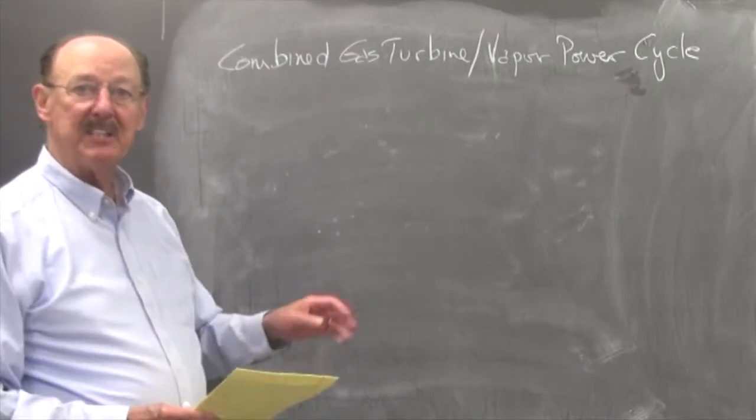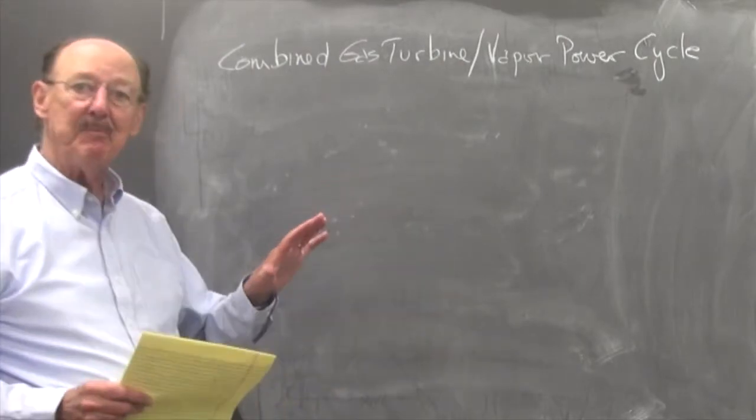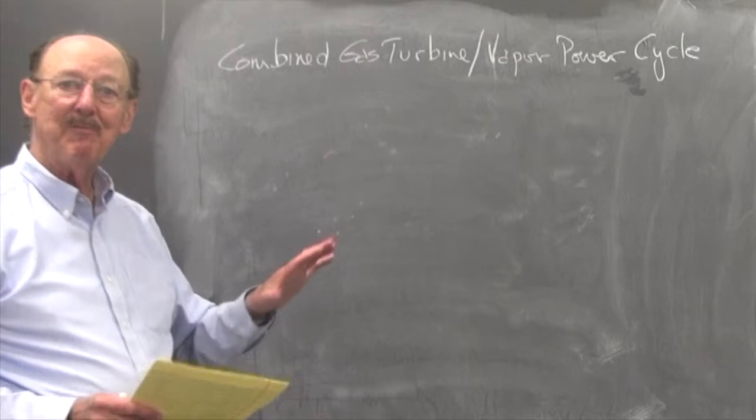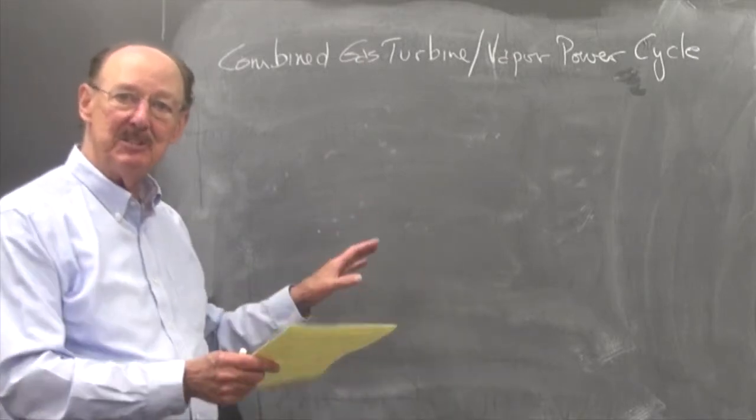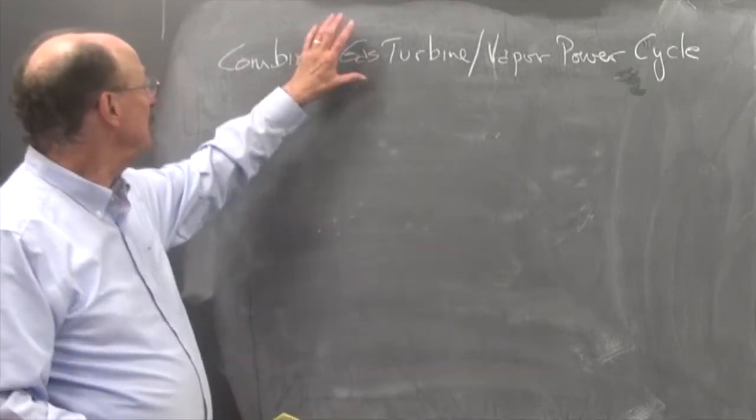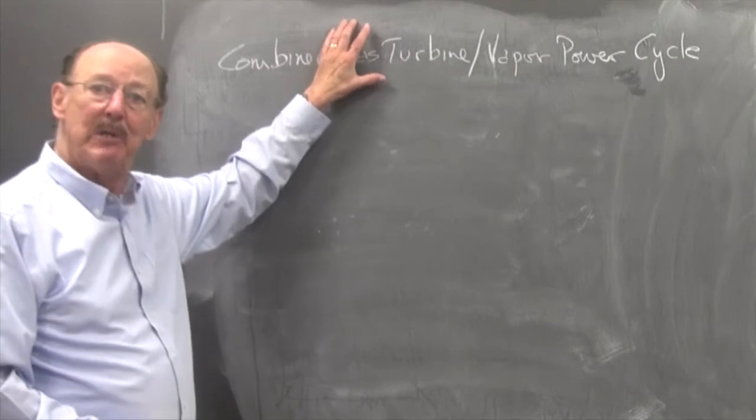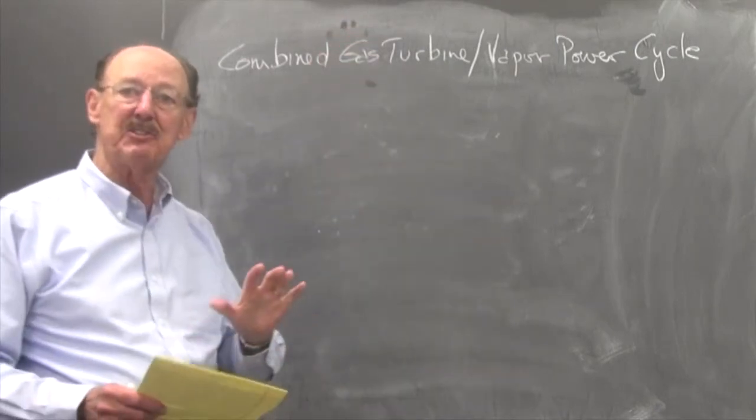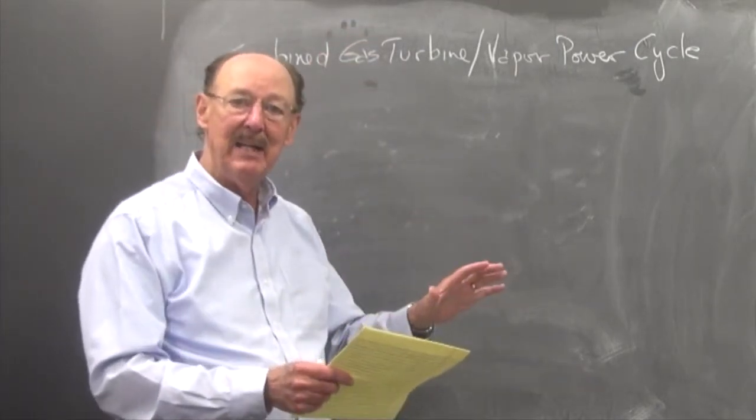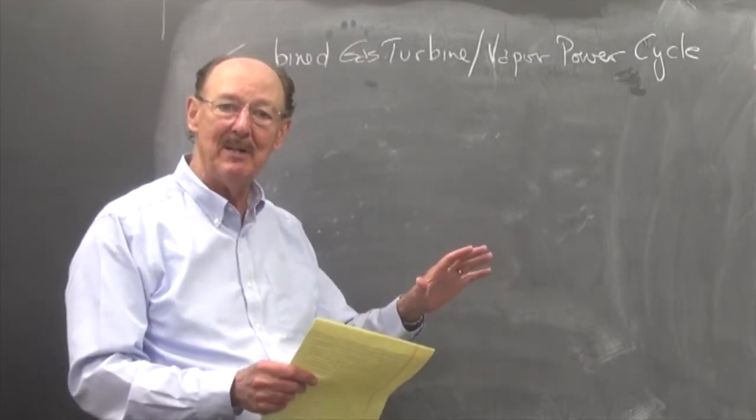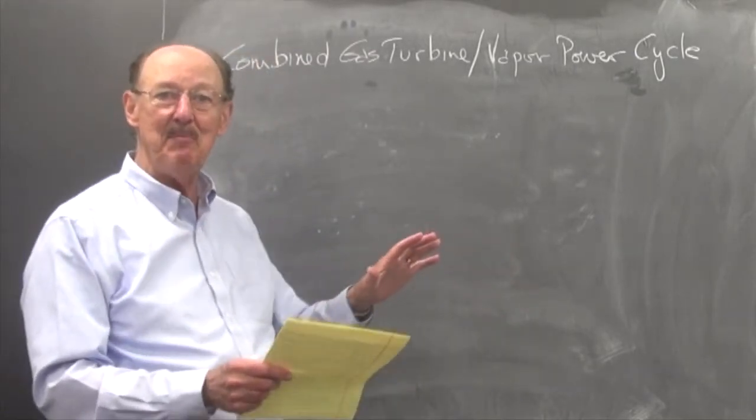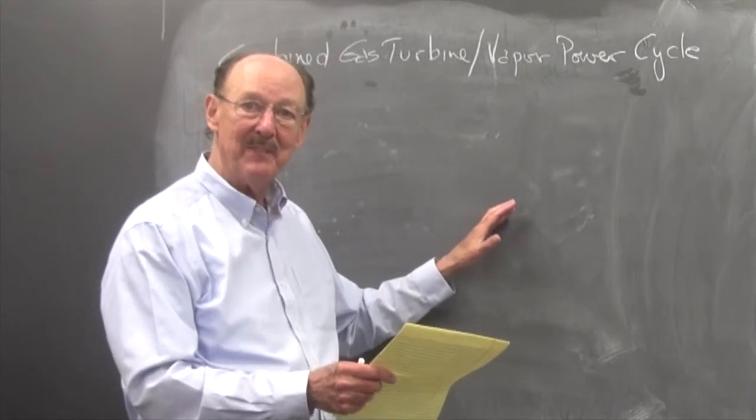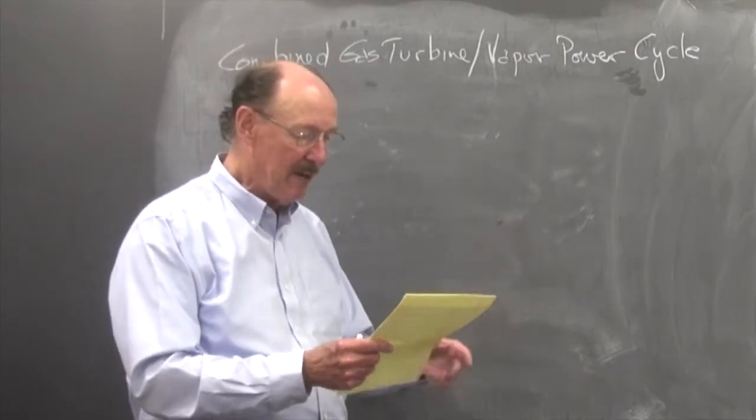Now we want to look at another example of a different energy source providing heat to the steam generator, using a gas turbine. When we looked at gas turbines, we saw the exhaust was at a high temperature. So what could I use that high temperature exhaust for? I could use it to generate steam and have a steam power plant as well. Let's look at how that works.